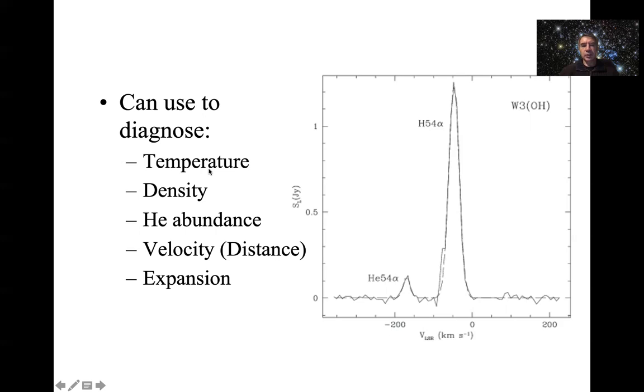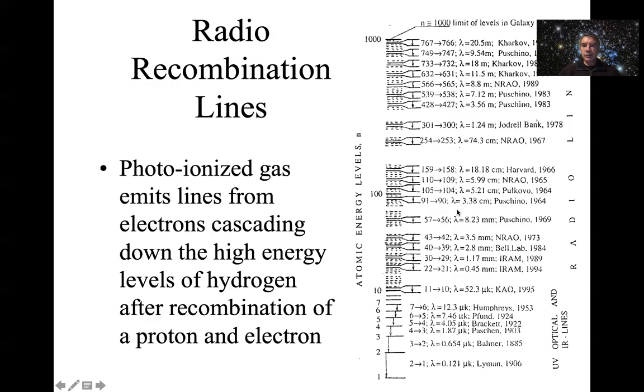We can use these kinds of lines to diagnose all sorts of things about ionized gas. You can get an extra check on the temperature from the ratio of the strength of the line to the strength of the continuum. These very high level lines, a long way from the nucleus, are very susceptible to collisions which can change the energy level slightly and lead to broadening of the line. This is called pressure broadening.